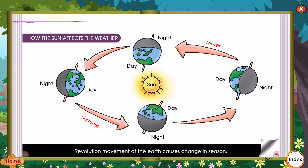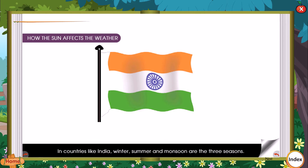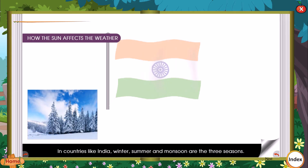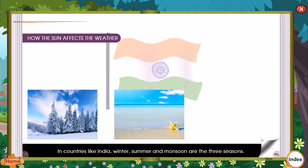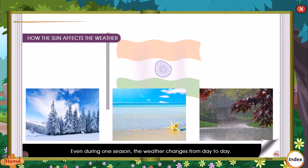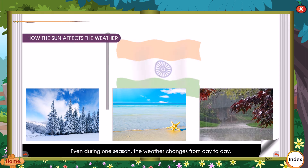The revolution of the earth causes change in seasons. In countries like India, winter, summer and monsoon are the three seasons. Even during one season, the weather changes from day to day.